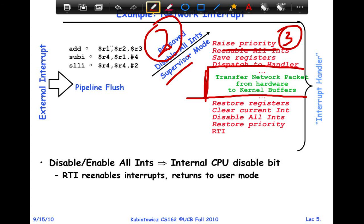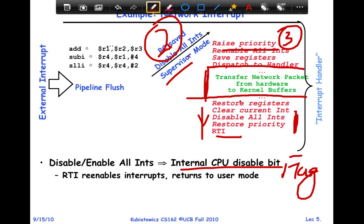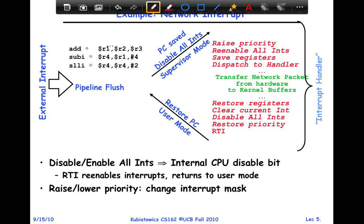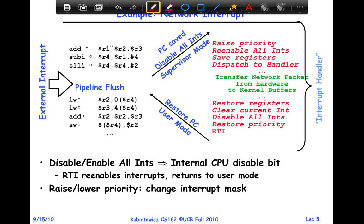Once state saving finishes, the OS re-enables interrupts, saves all registers, and dispatches to the interrupt handler. The interrupt-specific portion — the green section — handles the network packet: reading bytes from a circular buffer into a kernel buffer, saving the packet, and sending back an acknowledgement to the hardware if needed. Then the reverse happens: registers are restored, the interrupt is cleared, interrupts are disabled, priority is restored, and the RTI is executed. You don't want an interrupt between these last instructions. Finally, the PC is restored and control returns to user mode.